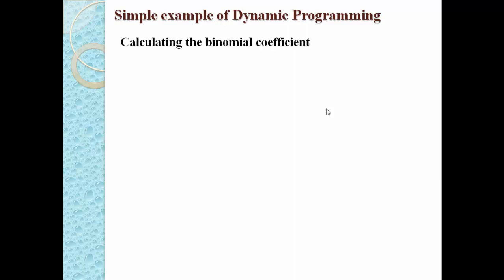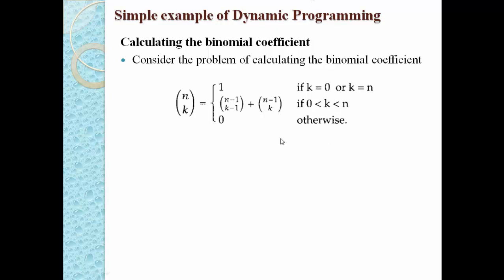Let us discuss a simple example of dynamic programming: calculating the binomial coefficient. To calculate the binomial coefficient, we have a recurrence equation: C(n,k) = 1 if k = 0 or k = n. If the value of k is greater than 0 and less than n, then we return C(n−1, k−1) + C(n−1, k).